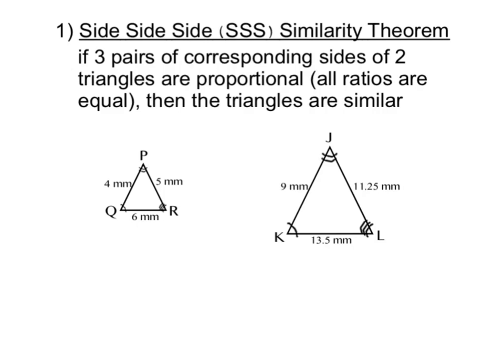The first triangle similarity theorem we'll be looking at is called the Side-Side-Side similarity theorem. This theorem states that if three pairs of corresponding sides of two separate triangles are proportional — meaning all the ratios are equal to one another — then the triangles are similar.